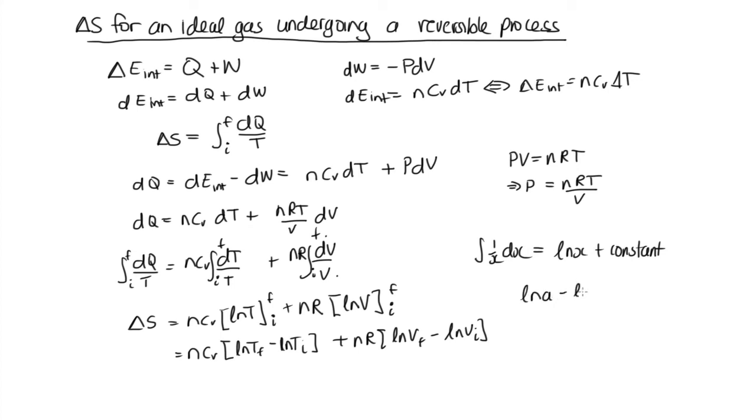Remembering back to our log rules, if we have log A minus log B, this is equal to log of A over B. So we can write this as nC_v log T_f over T_i plus nR log V_f over V_i.